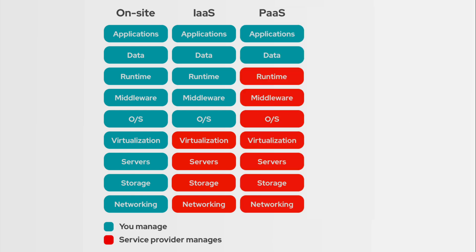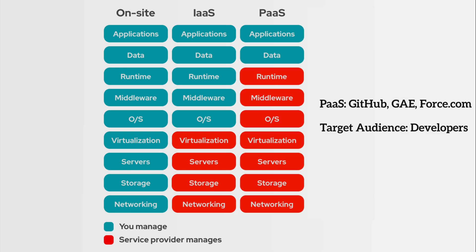The next level is PaaS, or Platform as a Service. Here, everything from the runtime layer down all the way to the networking stack is managed by a service provider, and we only worry about the data and the applications. A couple of examples: GitHub, Google App Engine, and Force.com are all PaaS platforms. The target audience for PaaS platforms happens to be developers and software engineers.